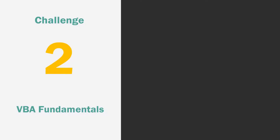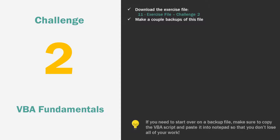For those who appreciate a little bit more direction, we are going to start by opening the exercise file in the description of this video. Make a couple of backups of this exercise file so that you can return to scratch if anything gets messed up. And if you do need to scrap an exercise file, make sure to copy the VBA script and paste it into Notepad or something so that you don't lose all your work when you open the backup copy. Once you've made a couple of copies of the file, insert a module and a procedure and then program a macro to accomplish the following.